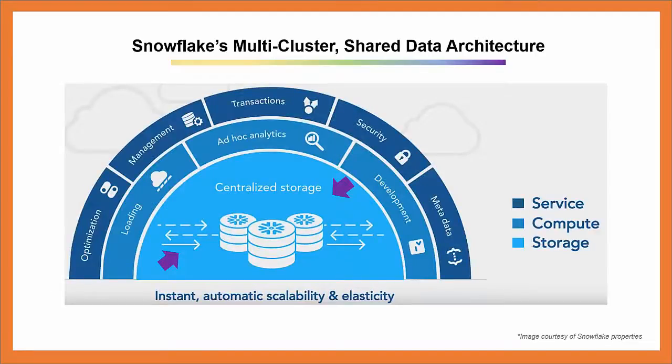In this image, you see the centralized storage layer pointed to by the purple arrows. The data remains in one place all the time in Amazon S3. Users with privileges can do structured or semi-structured queries from apps, JSON, or Avro, and data can be read in directly with no schema definition. It's treated as relational, structured data. As it loads in, it discerns schema as it's read. Then it's columnarized and metadata is extracted, encrypted, and compressed.